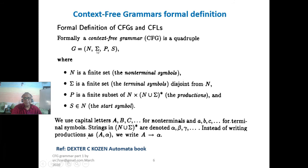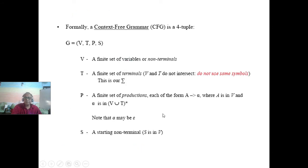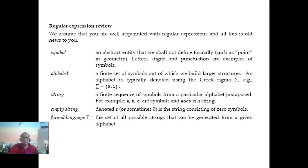In grammar notation, some books use 'V' for variables and some use 'non-terminals' — both are valid. P stands for production rules, sigma for alphabet, and S for start symbol. All grammars have the same four-tuple structure; only the rules are different. The course will not go into detail on regular expressions since students already know them.